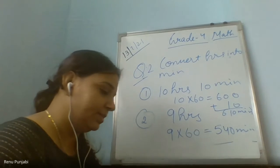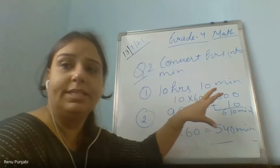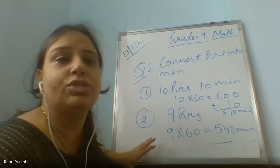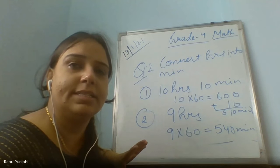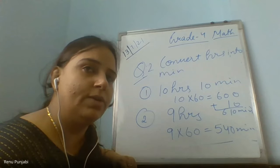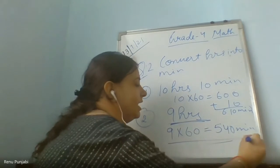Now we are converting minutes into seconds. One minute equals 60 seconds. Mohammed, seven minutes equals how many seconds? Find out. Also — the second question is 9 hours only. The answer is this — 9 hours is the question, 540 minutes is the answer.